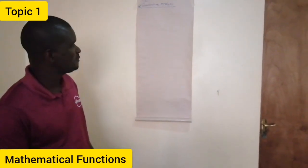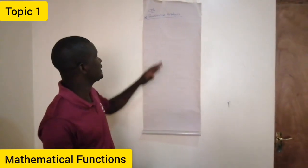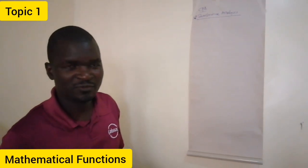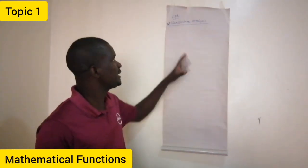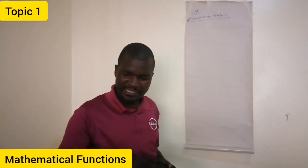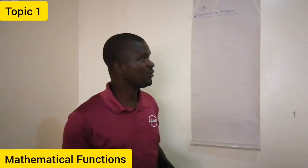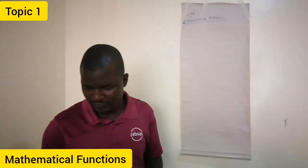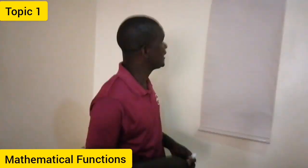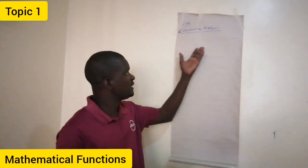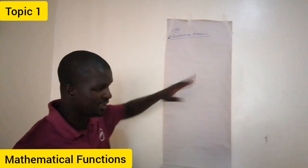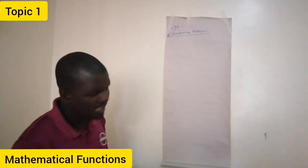Dear students, welcome to this lesson. The topic is quantitative analysis. Quantitative analysis is number 12 for CPA. This unit generally talks about mathematical techniques — making decisions using mathematical techniques — and that is what we are going to go through here. For those students doing their undergraduate degree in B.Com or statistics, and also those doing CPA, this will be a very important session.